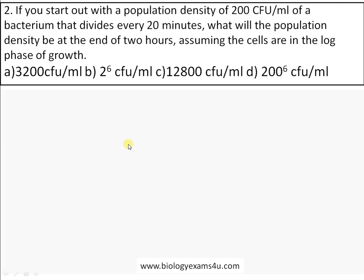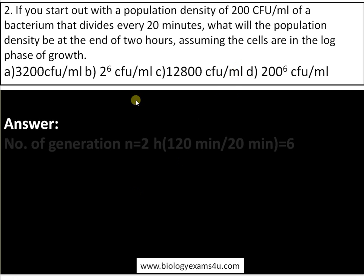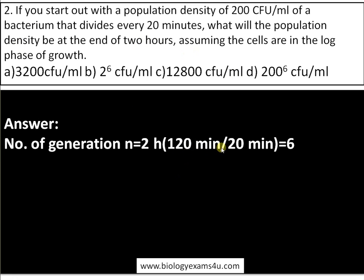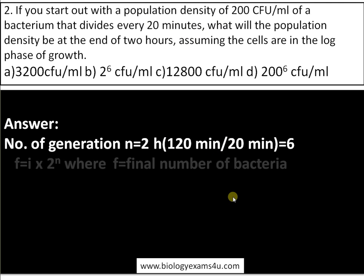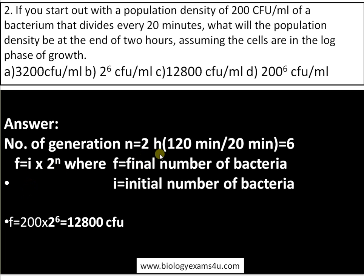Using the same equation — first finding the number of generations: 2 hours is 120 minutes divided by 20 minutes equals 6 generations. Then applying F = I × 2^N: the initial number is 200 colony forming units, so 200 × 2^6. The answer is 12800 colony forming units per ml.